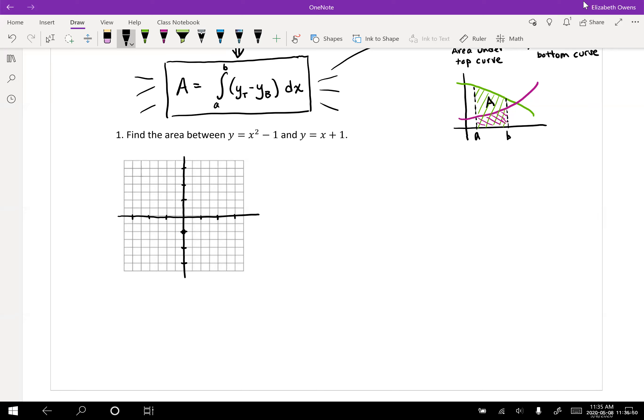So our parabola is going to open upwards like so, and let's put a point here. That'd be two, three and negative two, three. Good, it's just going to fit nice. Fill in our parabola. There we go.